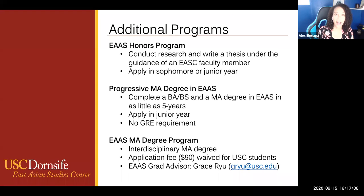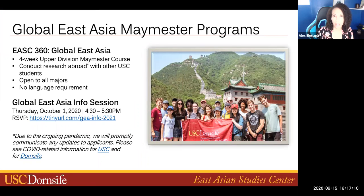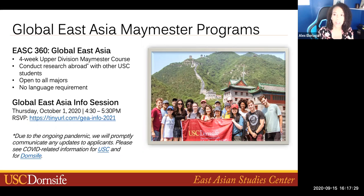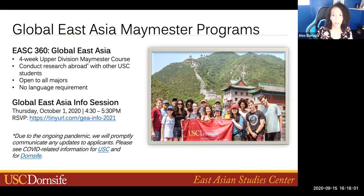While studying East Asia, we highly encourage you to study abroad. Students can study abroad in East Asia for a semester or year through overseas studies, but the East Asian Studies Center also offers four-week Maymester programs in China, Tokyo, and Kyoto. EASC 360, or Global East Asia, is an upper division course offered in the spring semester that occurs from mid-May right after commencement to mid-June, with two weeks of travel in the country of study while conducting independent research in a small cohort. There are no major or language requirements. We have an information session on October 1st covering the application process, course information, and updates on semester programs.